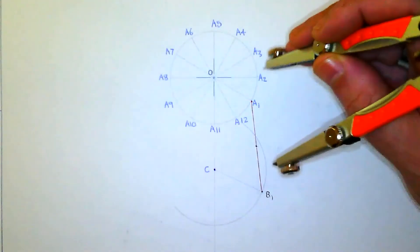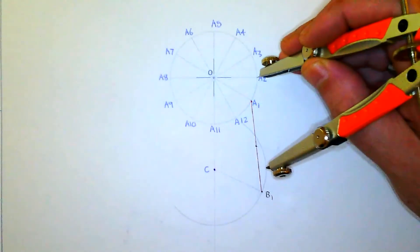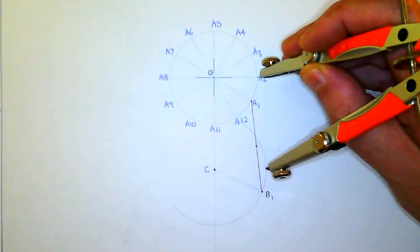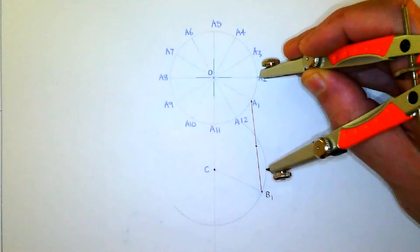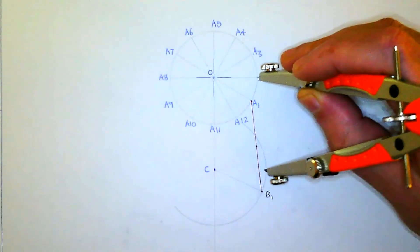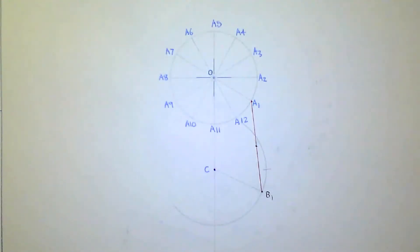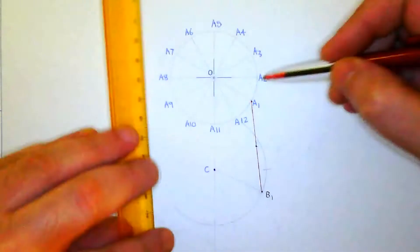So next what you do is you put your compass on A2, and of course AB has a distance of 50, so make sure that your compass is set to that same distance and you mark it on the curve. And then you can connect the lines from B2 to A2.